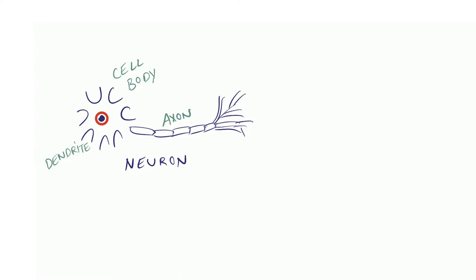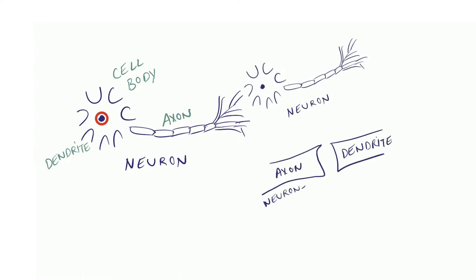Dendrites take sensory input to the cell body and axon take information to other neurons. Two neurons are very close together but they are not connected. There is a tiny gap between two neurons which is called a synapse. Information from one neuron to another neuron travels between this tiny gap, the synapse, through chemicals. These chemical messengers are called neurotransmitters.